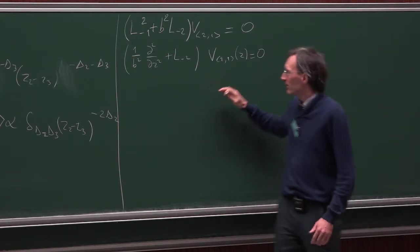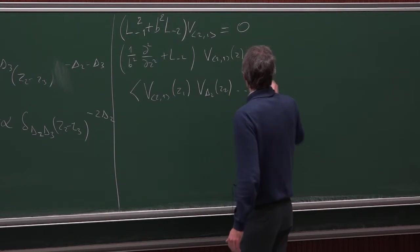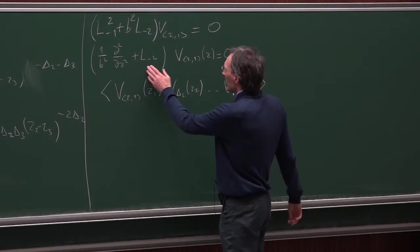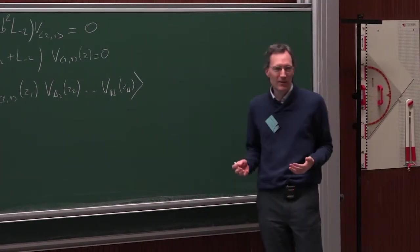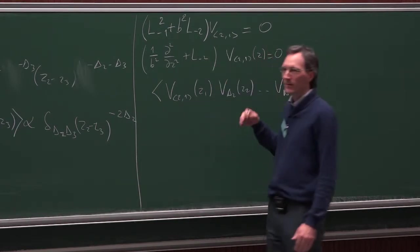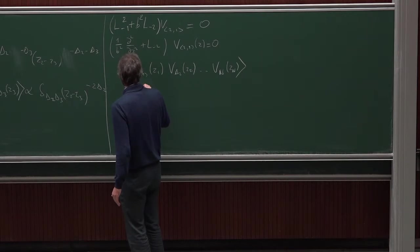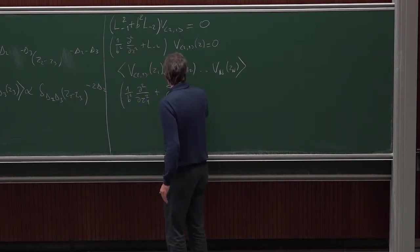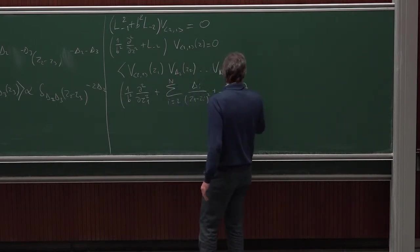What happens if we insert this field in a correlation function? We have V₂₁(z₁), Vδ₂(z₂), …, Vδₙ(zₙ). We compute L₋₂ acting on V₂₁ inserted into this correlation function using the local Ward identities, which give the action of creation operators like L₋₂. The result is the equation: (1/b²)(d²/dz₁²) + Σᵢ₌₂ⁿ [δᵢ/(z₁ - zᵢ)² + (1/(z₁ - zᵢ))(d/dzᵢ)] acting on the correlator equals zero.